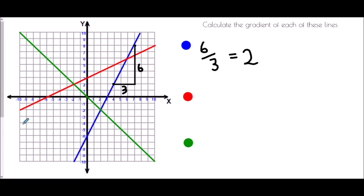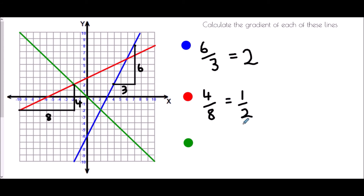For the red line, we choose two suitable points including one at (negative 2, 2). The change in y going upward is four squares, and the change in x going across is eight squares. So the gradient is four over eight. Simplifying by dividing both by four gives one half. The gradient is a half — for every one space to the right, the line goes up half a square.